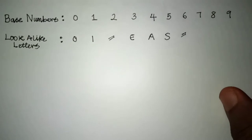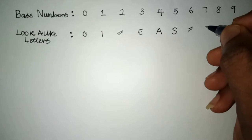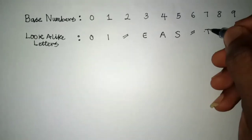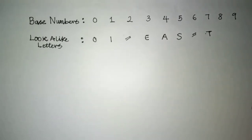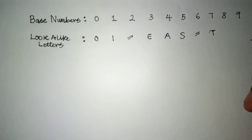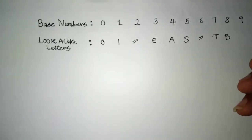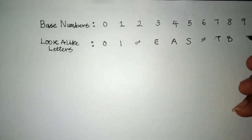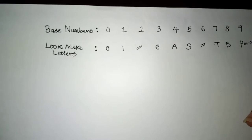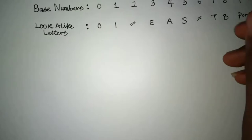What about number six? I don't think there's any letter that looks like six. What about number seven? The capital letter T looks like number seven, as you can see on your screen. What about number eight? If you said B, you're correct — capital letter B looks like eight. And for nine, P or Q can look like nine depending on how you look at it, so P and Q can represent nine.